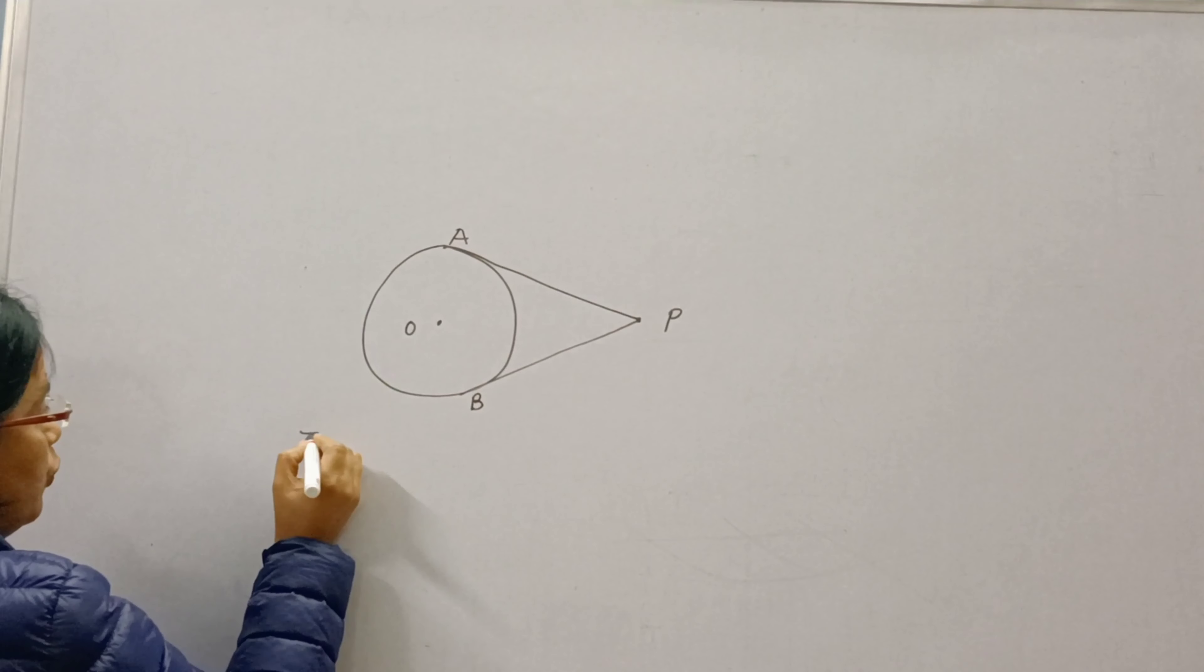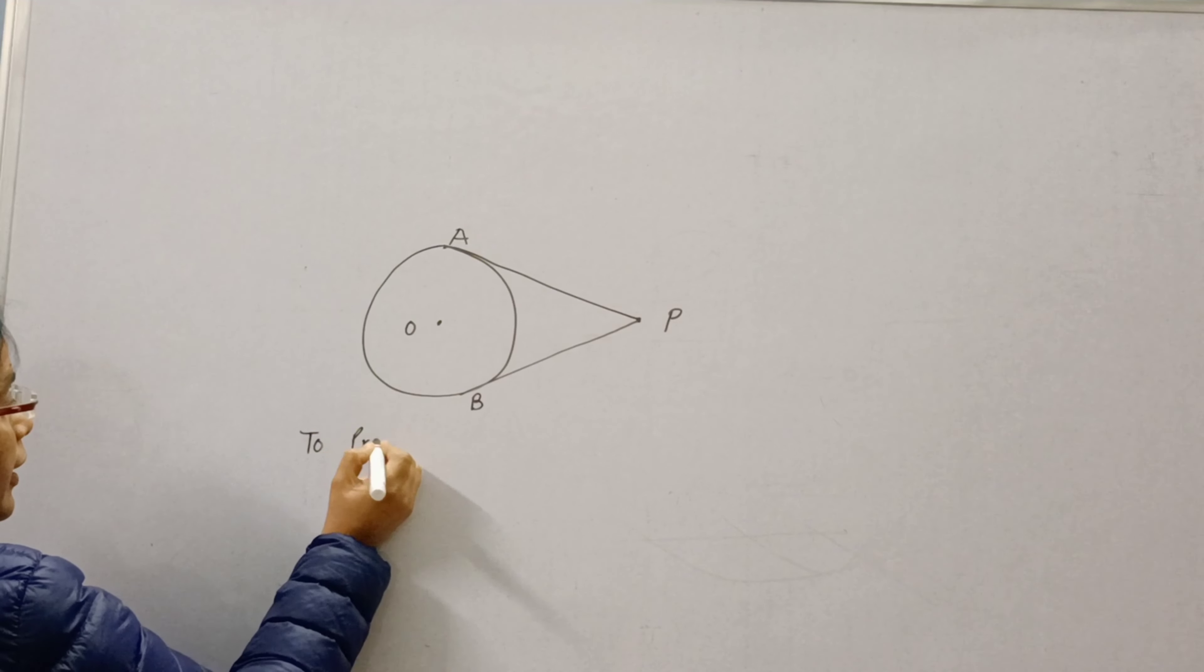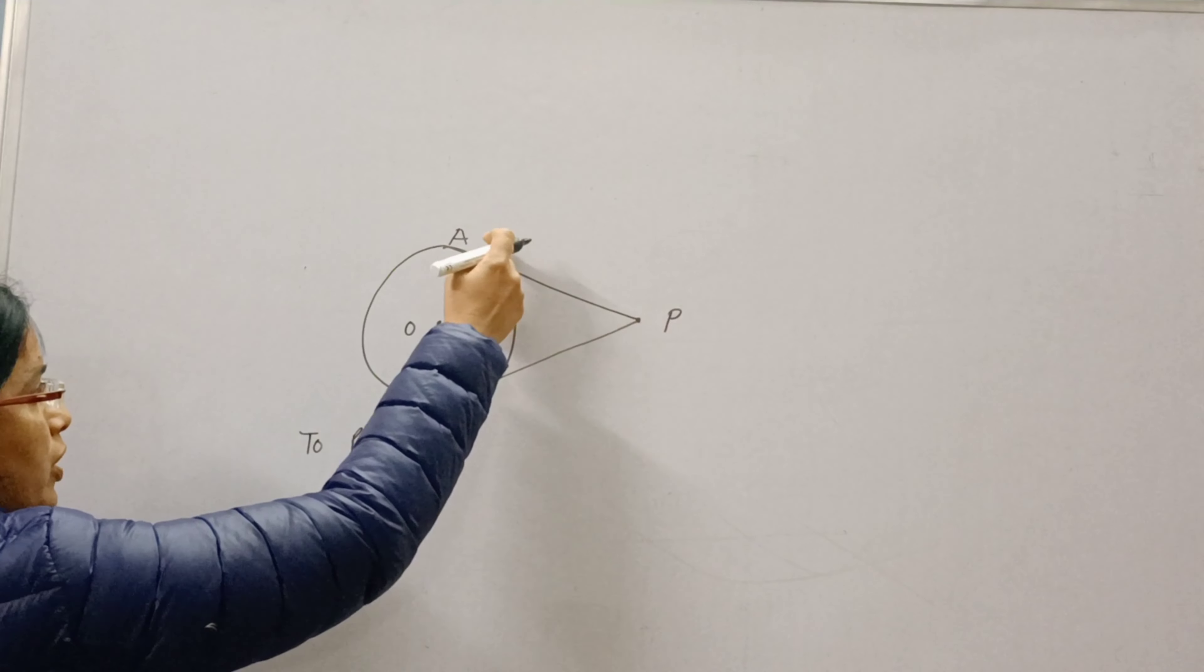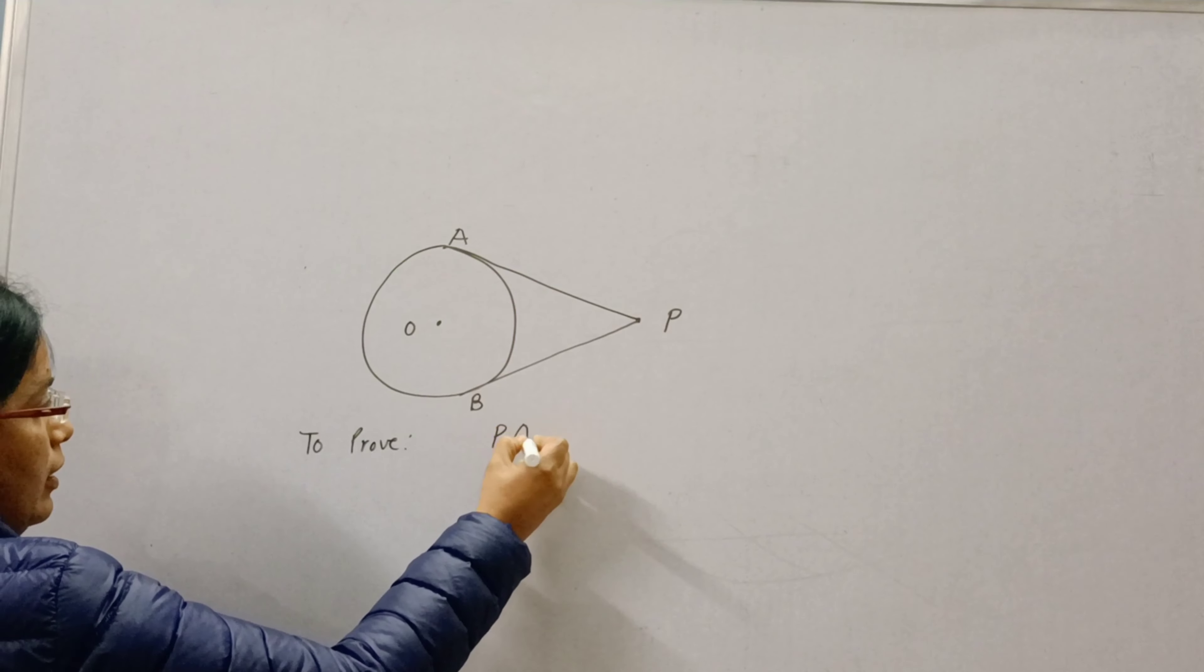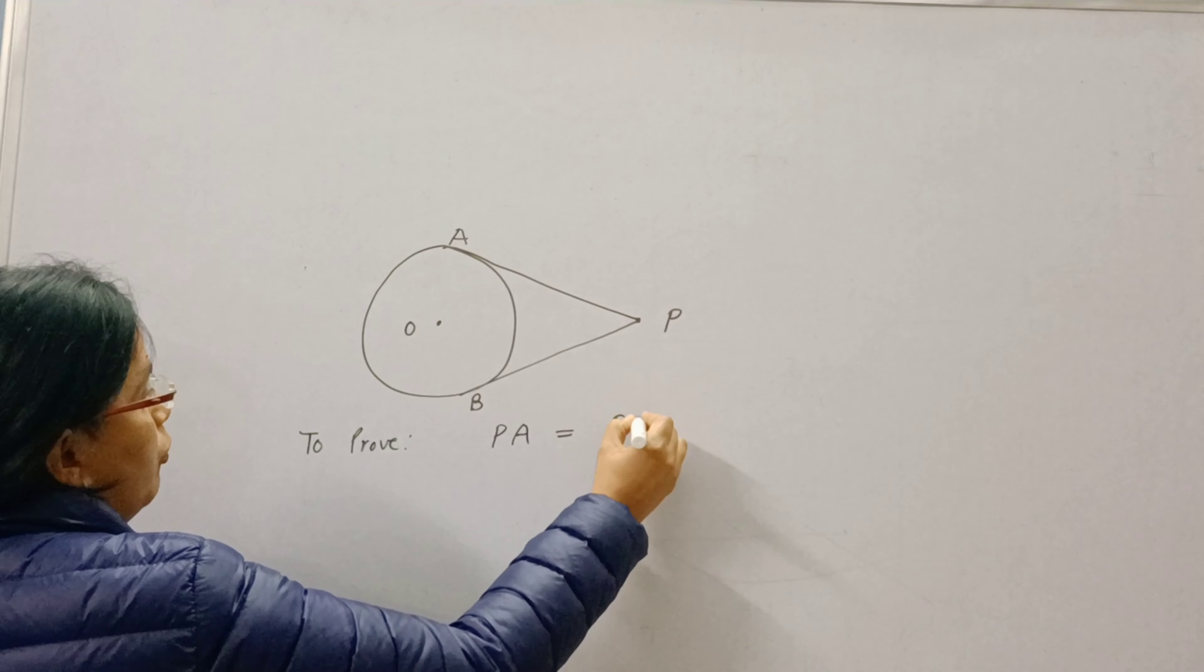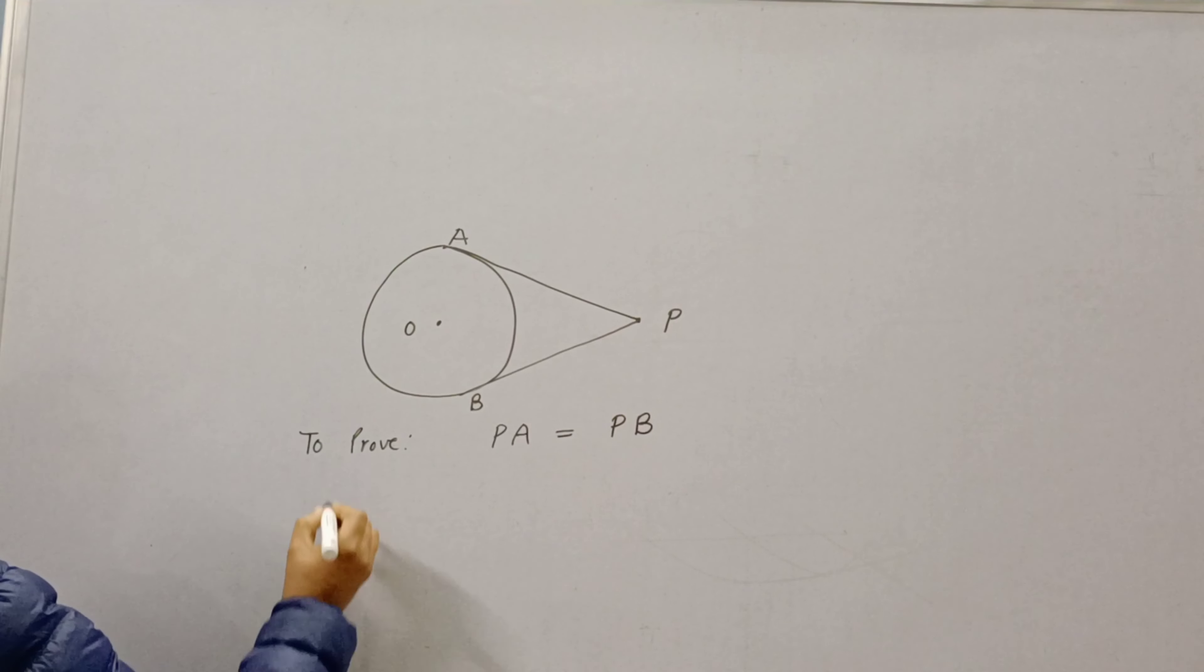And we need to prove tangents drawn from external point, that is PA and PB, are equal. So, we need to prove PA equal to PB.